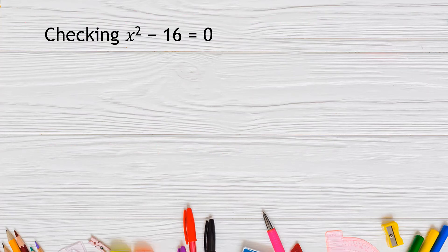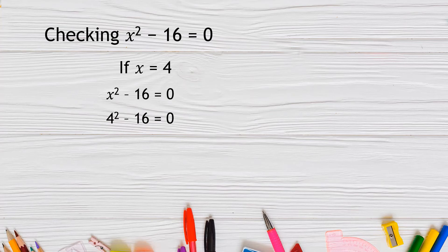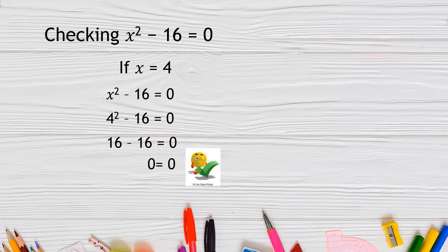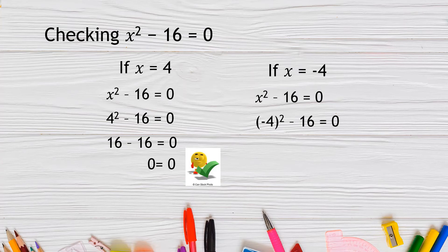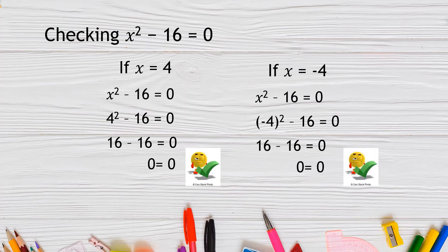Verify the solutions. If x = 4: substituting into the original equation, 4² − 16 = 0, which gives 16 − 16 = 0, so 0 = 0. Correct. If x = −4: (−4)² − 16 = 0 gives 16 − 16 = 0, so 0 = 0. That means the solution is correct.